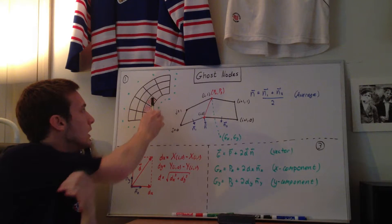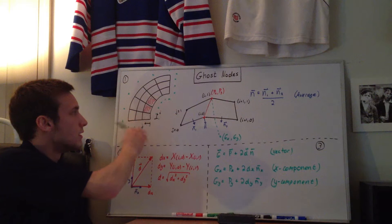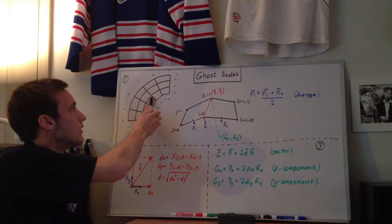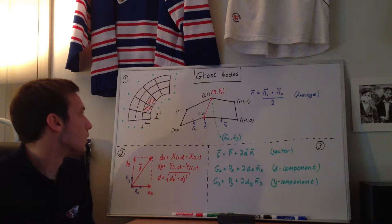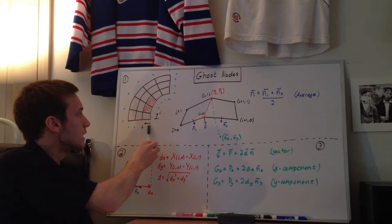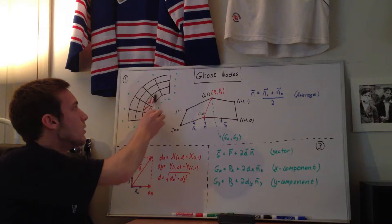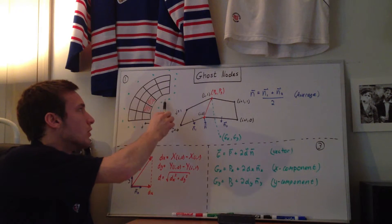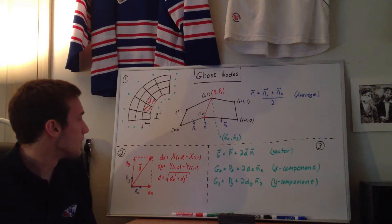And the points right in the interior. So on this right boundary, we're going to be using the points that are the next inward points essentially. So if this is the j equals zero boundary, because j goes in this direction, we're going to be using the j equals one nodes and reflecting them with the normal vector across the boundary to figure out where the ghost nodes are in space.